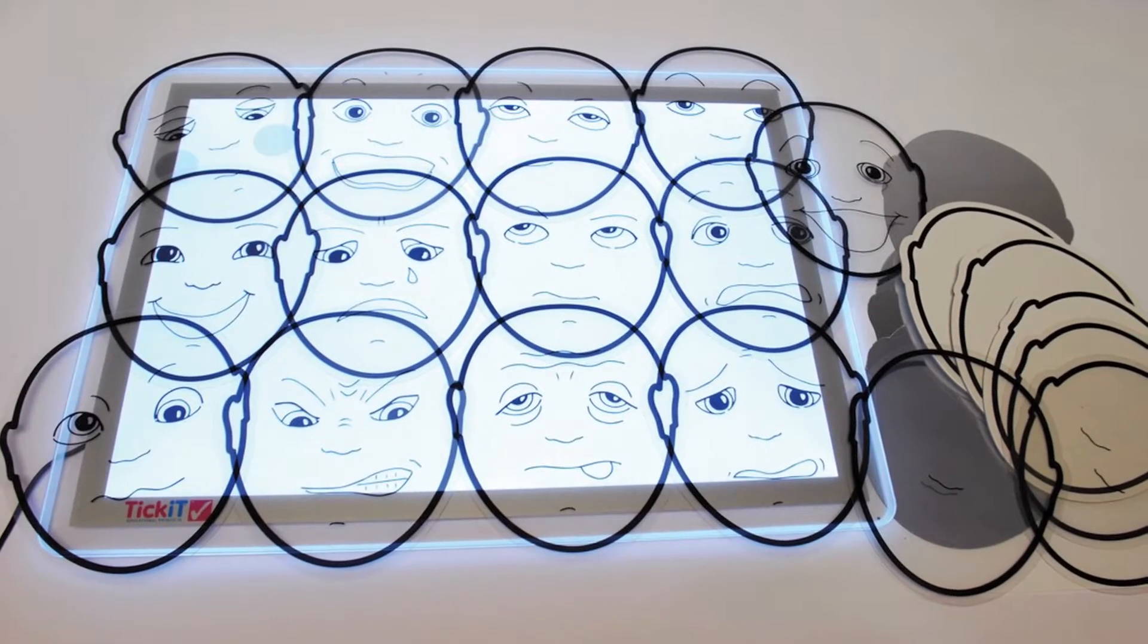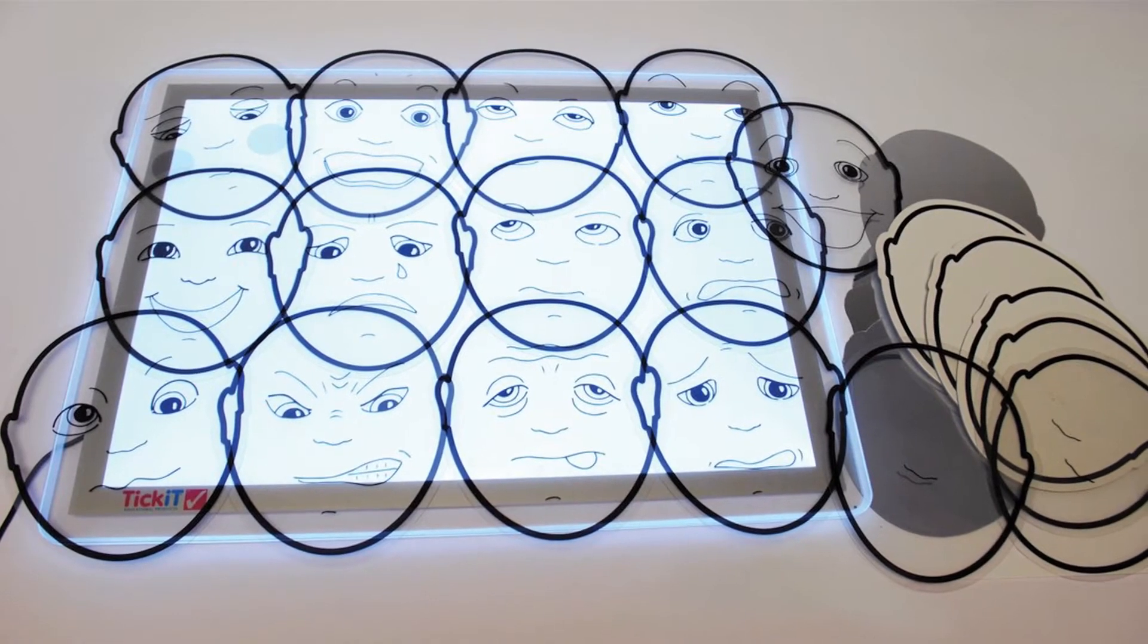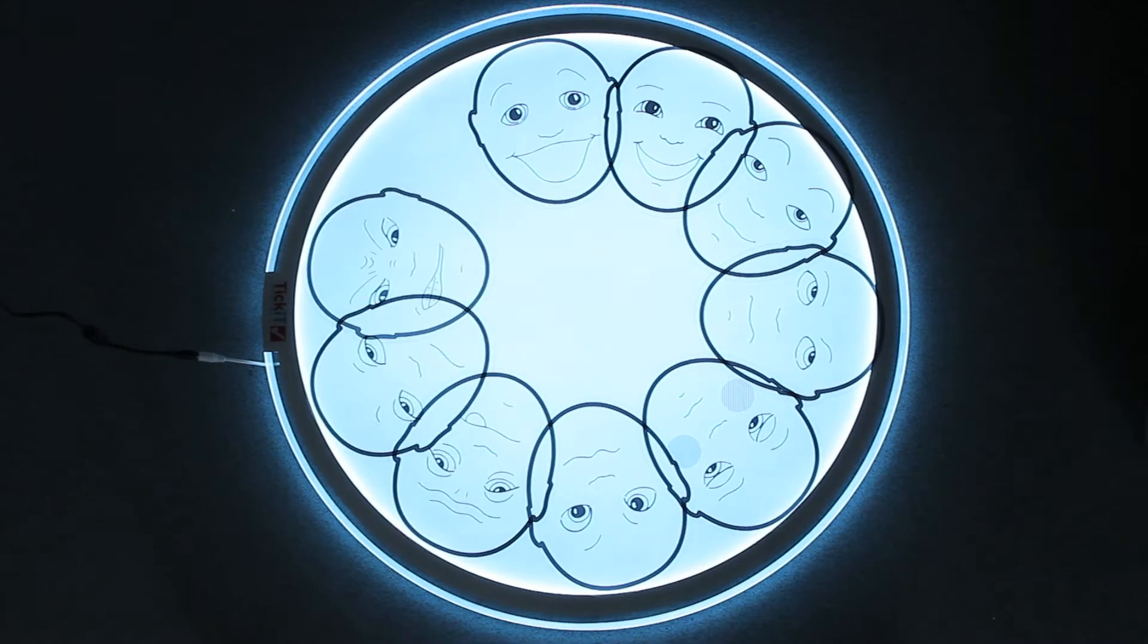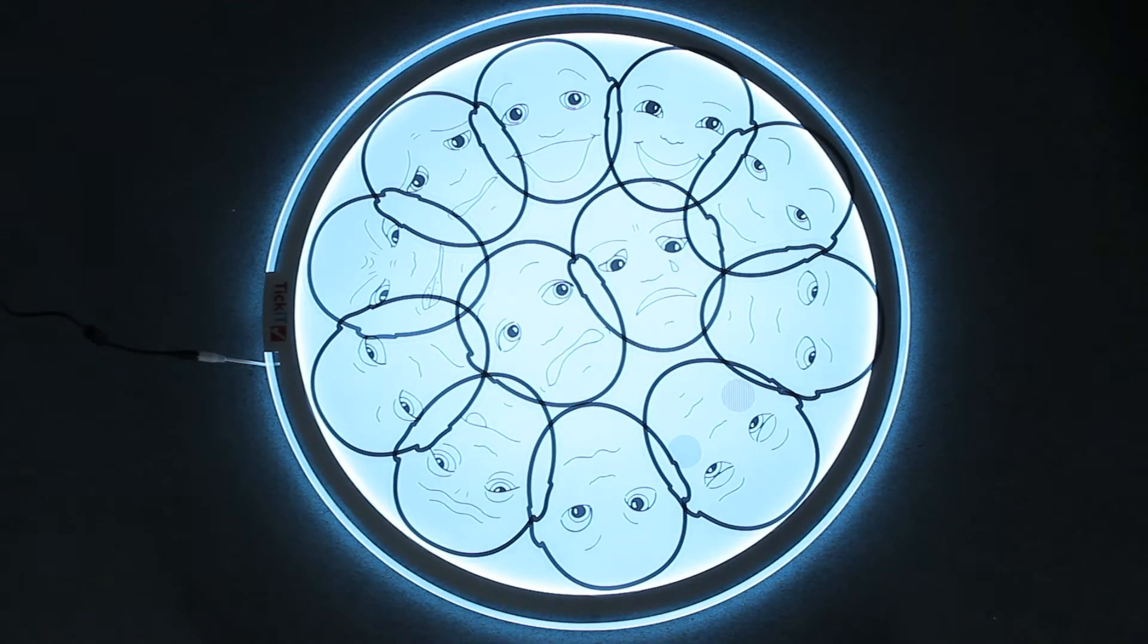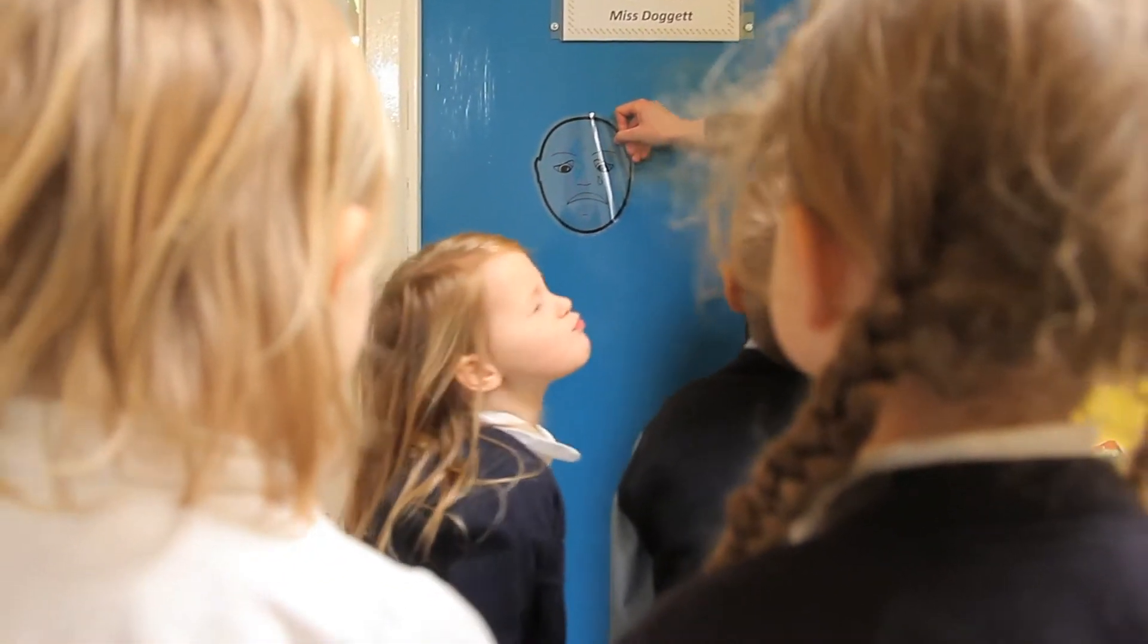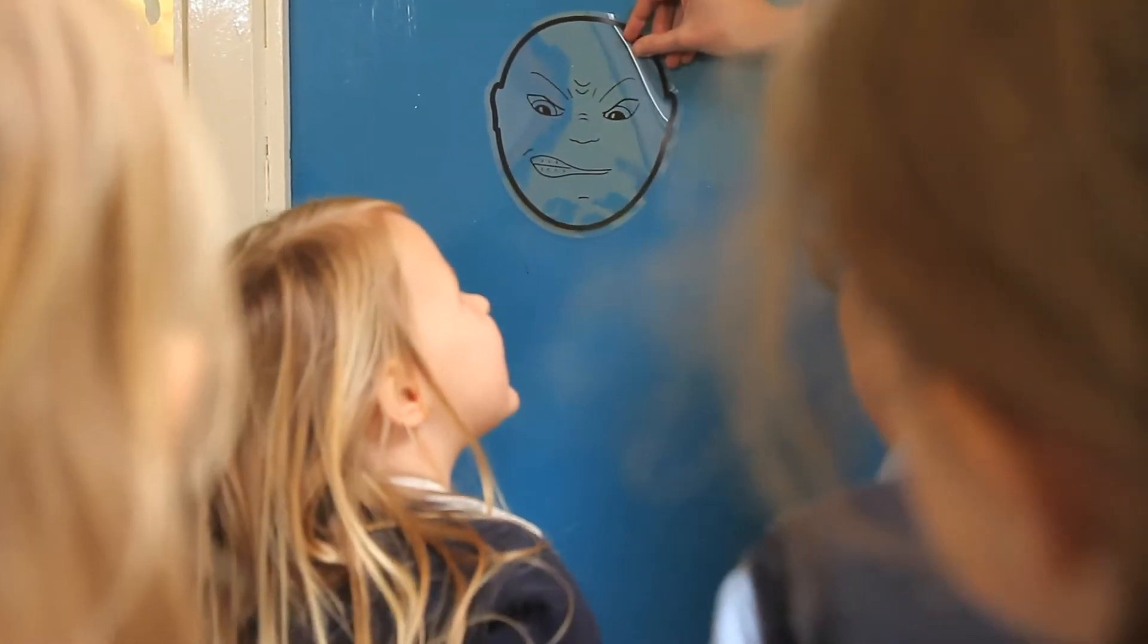The Understanding Feelings set comprises a range of resources to explore emotions. Included in the set are 13 acetate faces, all with different recognisable emotion expressions, and a key to these on an A3 poster.